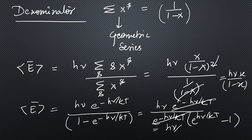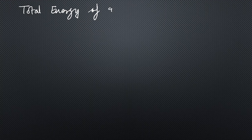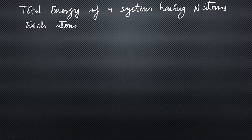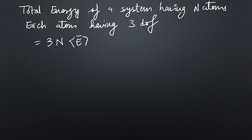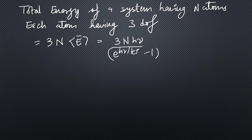Moving on, the total energy of a system having N atoms — each with three degrees of freedom because we have 3D harmonic oscillators — is: E_total = 3N · hμ / [exp(hμ/kT) − 1]. This is our total energy expression. We will now consider two cases.